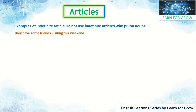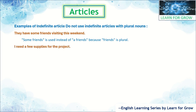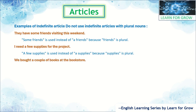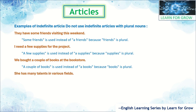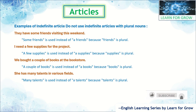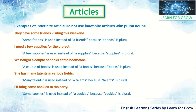Next rule — do not use indefinite articles with plural nouns. 'They have some friends visiting this weekend' — 'some friends' is used instead of 'a friends' because friends is plural. 'I need a few supplies for the project' — 'a few supplies' is used instead of 'a supply' because supplies is plural. 'We bought a couple of books at the bookstore' — 'a couple of books' is used instead of 'a books' because books is plural. 'She has many talents in various fields' — 'many talents' is used instead of 'a talents' because talents is plural. 'I will bring some cookies to the party' — 'some cookies' is used instead of 'a cookies' because cookies is plural.